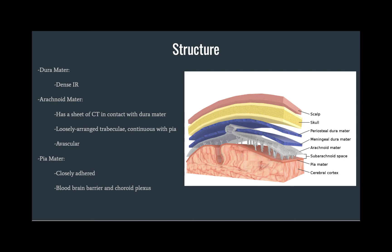The arachnoid mater also has two components: a connective tissue sheet in contact with the dura mater, and a layer of loosely arranged trabeculae that are continuous with the pia mater. Surrounding the trabeculae is a large sponge-like cavity called the subarachnoid space, which is filled with cerebrospinal fluid to help cushion the central nervous system and protect it from trauma.